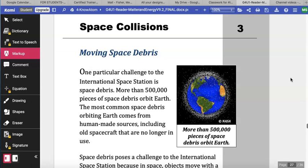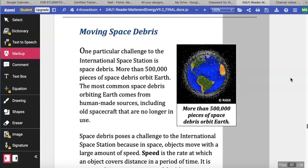Moving Space Debris. One particular challenge to the International Space Station is space debris. More than 500,000 pieces of space debris orbit Earth. The most common space debris orbiting Earth comes from human-made sources including old spacecraft that are no longer in use.